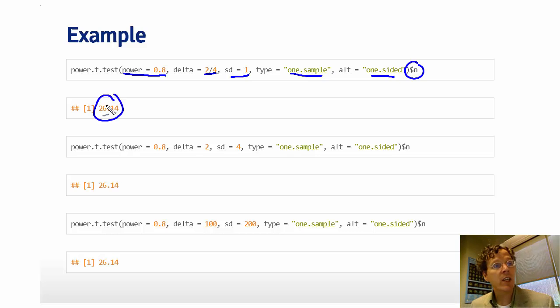And it gives me a sample size of 26, and then in these kinds of calculations, you always want to err on the side of conservatism, so you bump it up to 27 whenever you get a fractional value. You always get a fractional value. You always want to bump it up to the nearest integer.